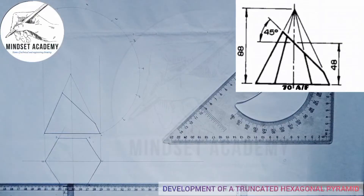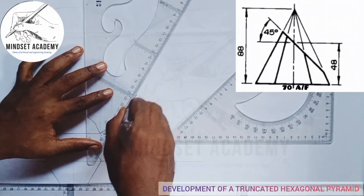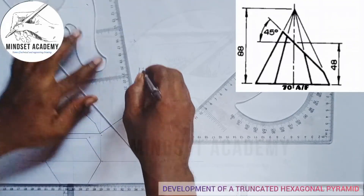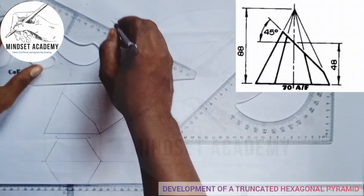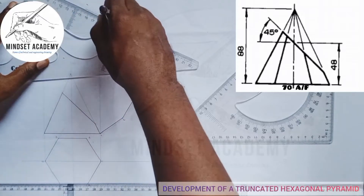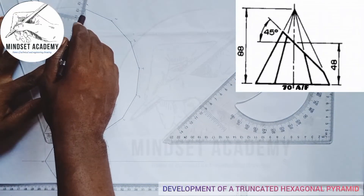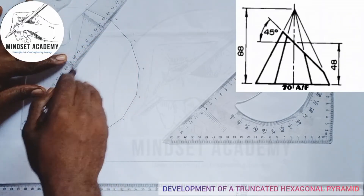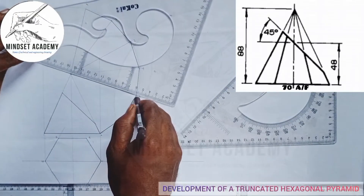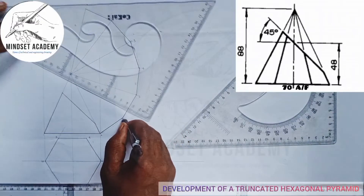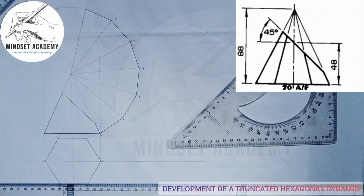I'm going to join the marked points using my set square with straight lines. Starting from one side: I'll have this line, this line, this line, this line, and this line. Then I'll join all these points to the apex point of the pyramid — this way, this way, this way, this way, and so on.